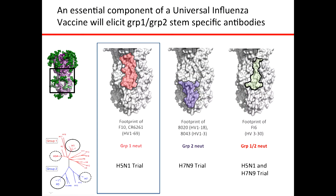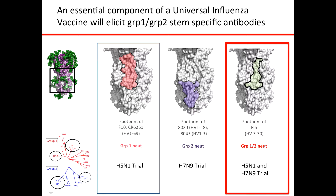We're very fortunate at the VRC to have experimental vaccine trials of perhaps 25 to 60 individuals. This work was initially done using an H5N1 vaccine trial; we've also looked at an H7N9 (group 2) vaccine trial. What we're actually after are antibodies from these cohorts that recognize both group 1 and group 2, which would be a major component of a universal influenza vaccine.